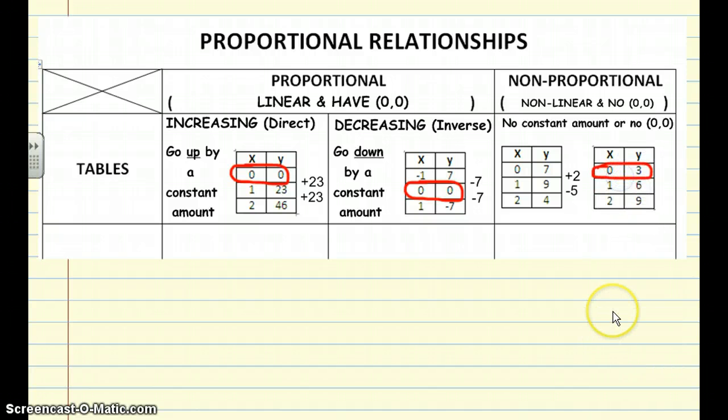In this second example that I have for non-proportional, even though 3 plus 3 is 6 and 6 plus 3 is 9, this does not include the point (0,0). So this is also non-proportional.